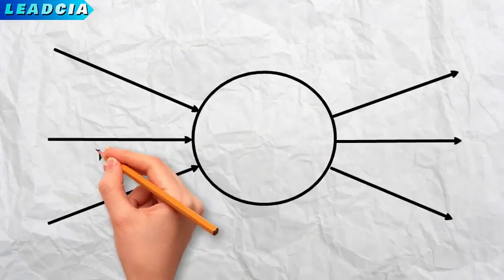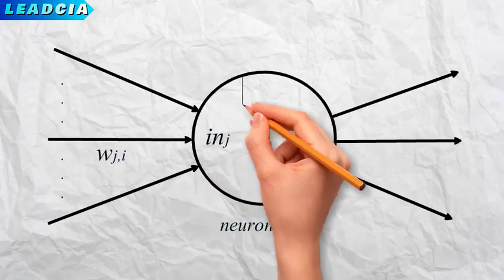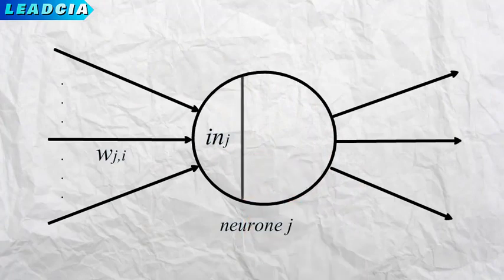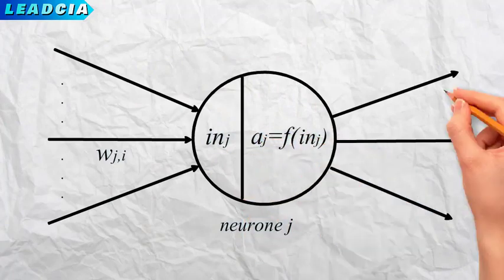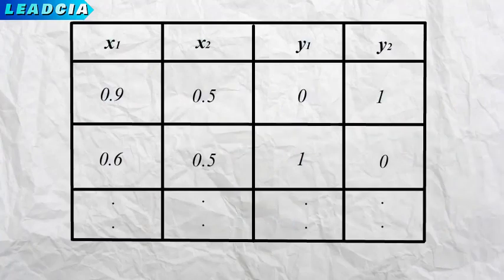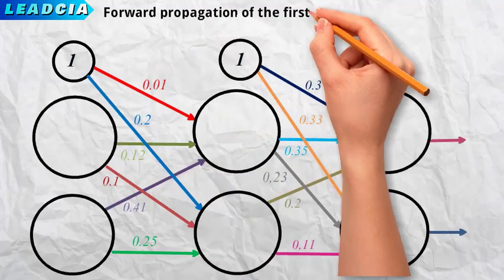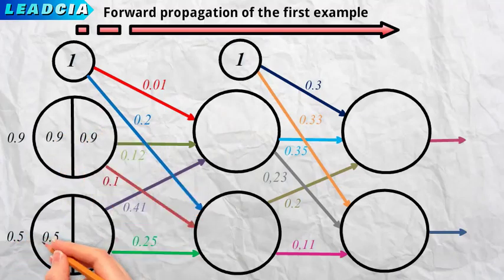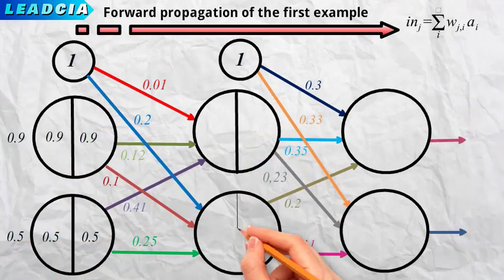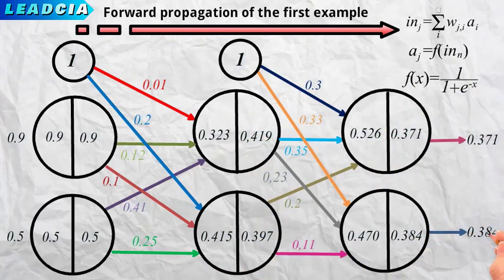Two notations we must know before moving on to the second step. One is the excitation of a neuron, noted 'in', which is equal to the set of inputs of this neuron weighted by their omegas. The other is the activation, noted 'a', which is equal to f of in, with f as the activation function of this neuron. The examples of the training dataset are learned one by one. Let's start with the first example: x1 equals 0.9 and x2 equals 0.5. These two values are assigned to the input neurons, then propagated forward along the network from the input layer to the output layer. As each neuron is passed through, the 'in' and 'a' values are calculated.